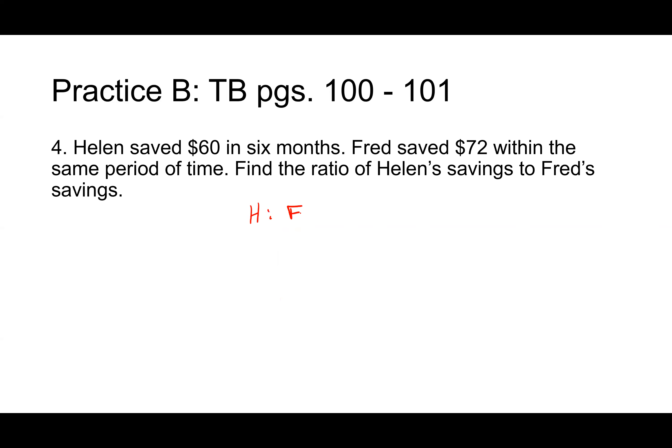Helen saved $60 in six months. Fred saved $72 within the same period of time. Find the ratio of Helen's savings to Fred's savings. Mateo? So it's three to six, three to six. Okay, let's see. Why did you change your mind? I always like to put in those initials first to help me fill in the units later. You gave me the correct ratio after, what did you end up dividing by? 12. And then you told me five to six. Great job.